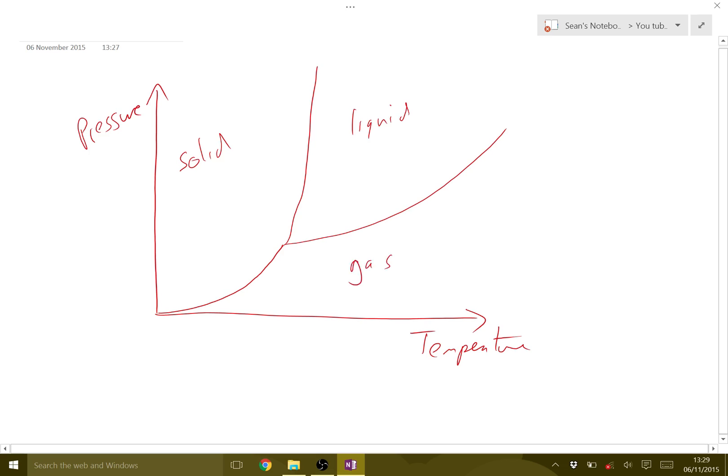What this allows us to do is look at this graph - if we know a material is at a certain temperature and a certain pressure, we just look at where that temperature and pressure is. Because it's in this region, it must be a gas.